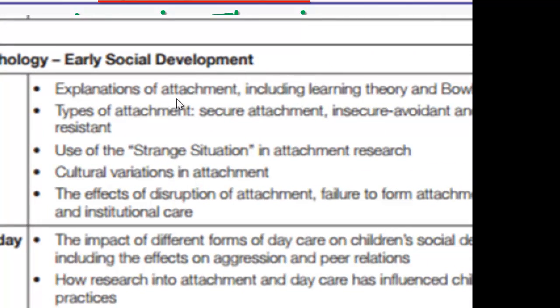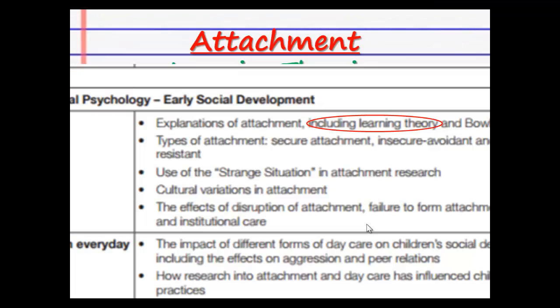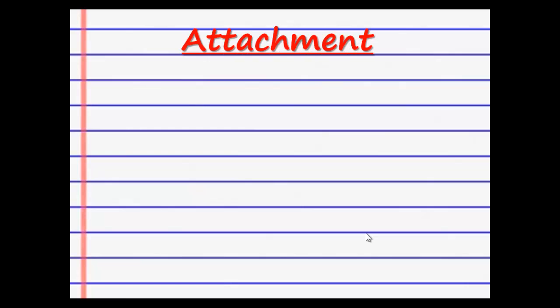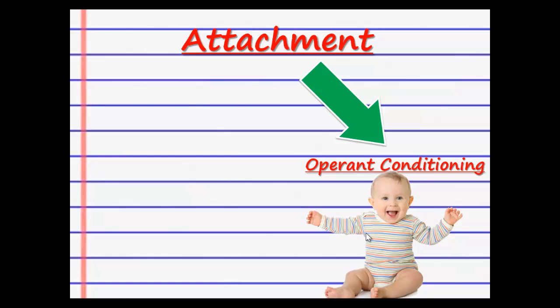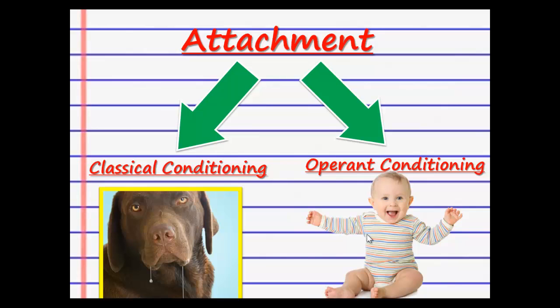You need to learn about the explanations of attachment, including learning theory, and that is what we will be learning. When we think about the learning theories of attachment in psychology, we think of mainly two theories. One of them is operant conditioning, and the other one is classical conditioning. This is not the last time you'll be seeing these two.